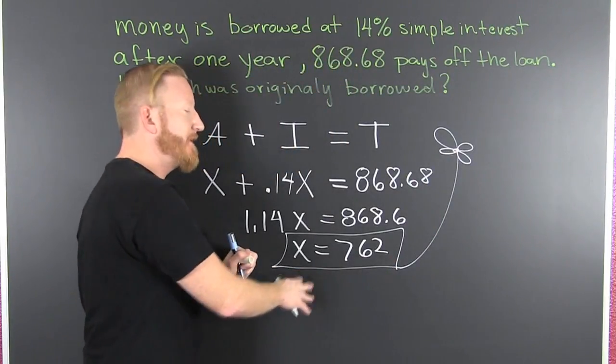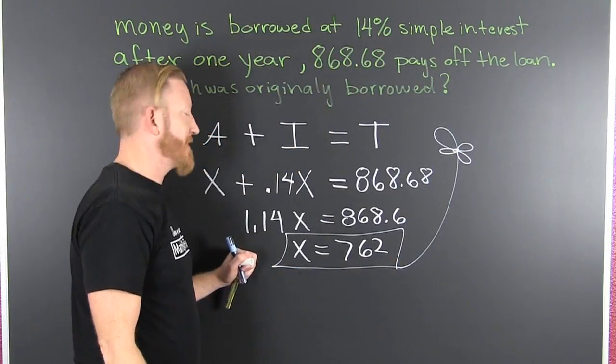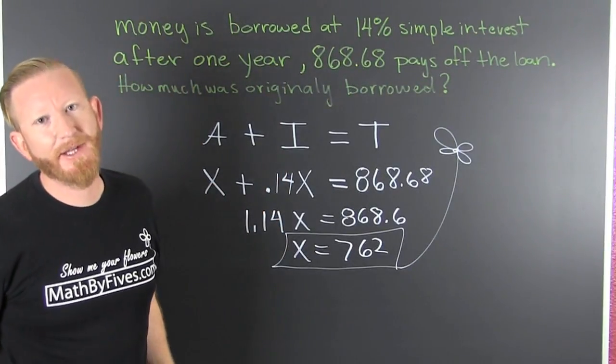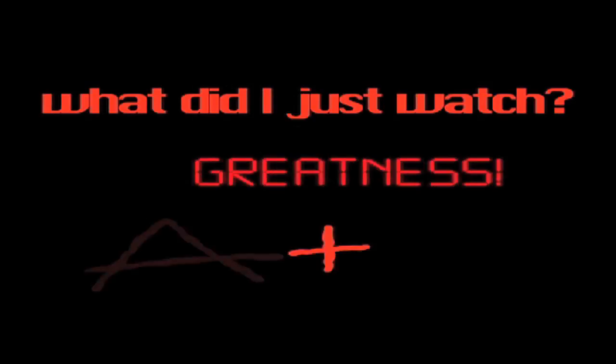So how much was originally borrowed? $762. What cost $762? Post it down below and keep it clean. We're sorry. The number you have dialed is not in service at this time.